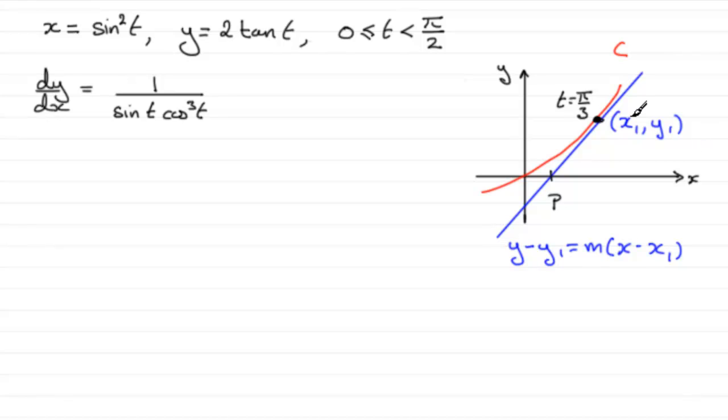Well if you did pause the video and have a go, I'm just going to now run through the solution with you. So first of all, we're going to need to get x₁, y₁, and that's when T equals π/3. We just substitute it into these two equations. So I'm going to say that when T equals π/3, then we get x equals sin²(π/3).